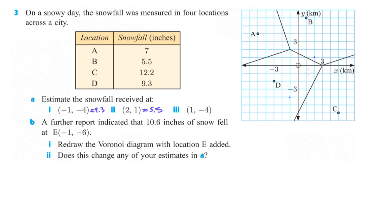And then we've got (1, -4). 1, 2, 3, 4. Now this one happens to be right on one of the lines, the line that separates D to C. So since it's on this edge, we're going to take the average of D and C. So we're going to go 9.3 plus 12.2 and divide that by 2. So that's going to be 21.5 divided by 2 is going to give us 10.5, that's half of 20 is 10. Half of 1.5 is 0.75. So 10.75 would be the estimate for that one. Okay.